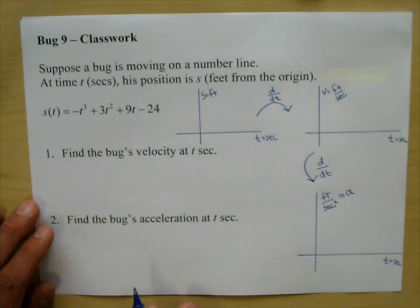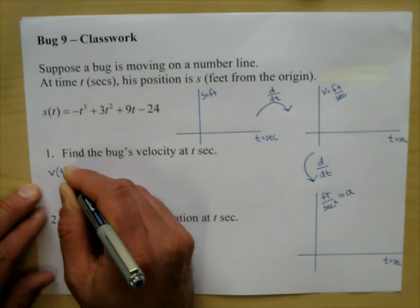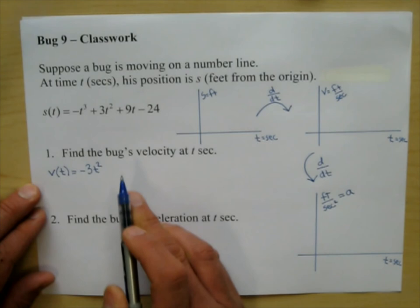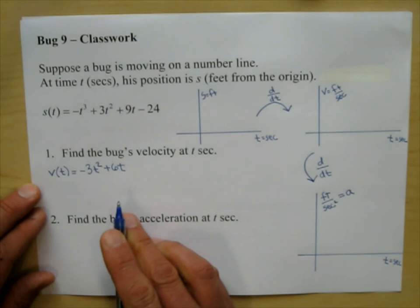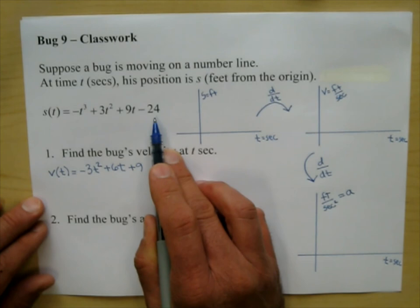So let's take the derivative of s(t). We can say s-prime, but I'm going to call it v(t). Using the shortcut rules: the derivative gives us negative 3t squared, then plus 6t, then plus 9. The derivative of the constant term is zero, so that drops out.